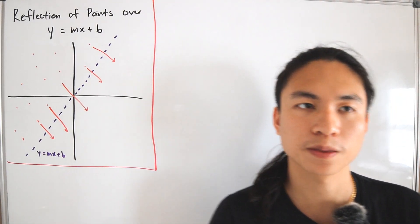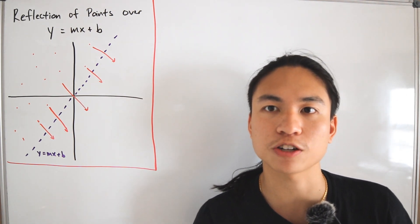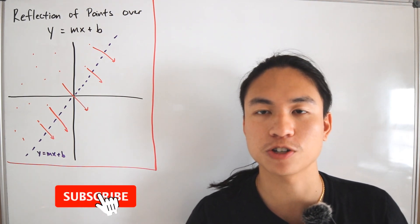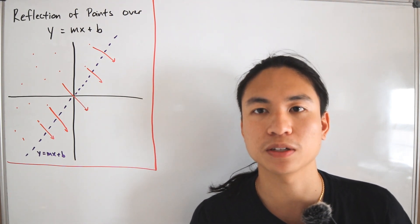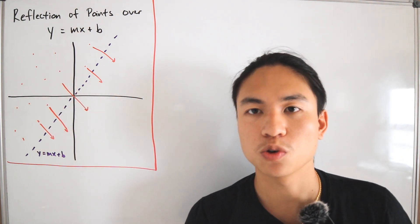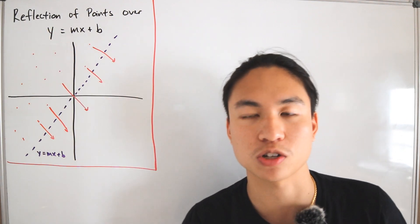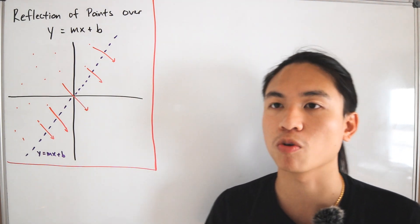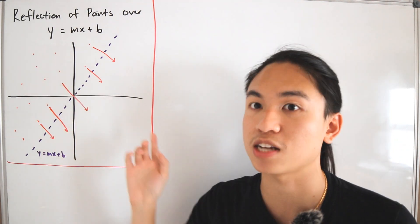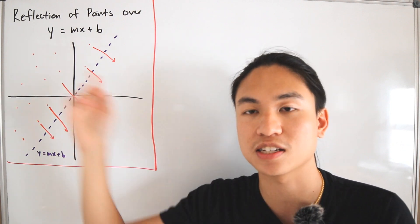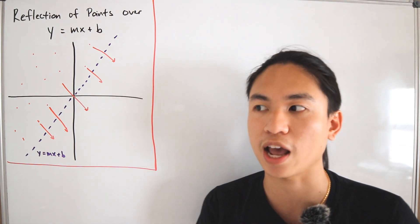Welcome back. Today's video is going to be a little different. Instead of solving a problem, I want to go over a discussion specifically about reflections of points over the linear equation y equals mx plus b, where m and b are both constants. As you learn from algebra, whenever you perform such reflections you want to set up a perpendicular line using the negative reciprocal slope, and use the midpoint formula to maintain equal distances from the line.